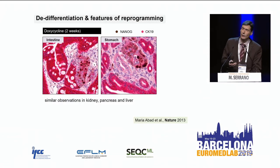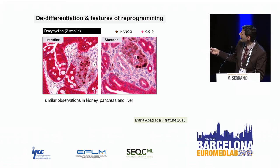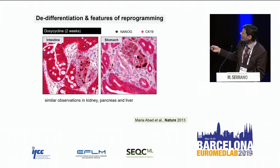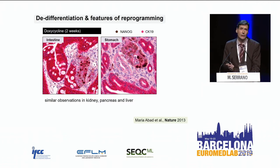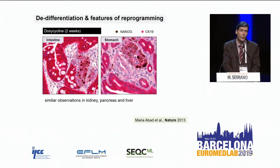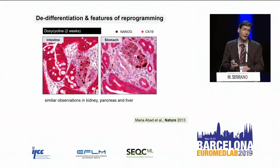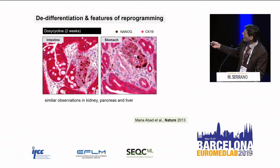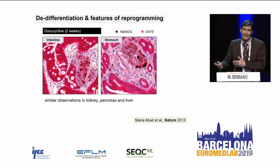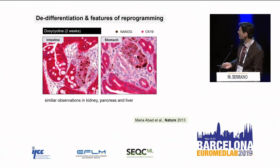Here is an example of this de-differentiation in the large intestine, labeled with cytokeratin-19. You can see a normal crypt, but in another crypt something happened — the cells have lost cytokeratin-19 and are starting to express NANOG. NANOG is a protein unique to pluripotent stem cells, expressed only in the first five days post-fertilization before implantation. So we are reactivating a very early embryonic gene in vivo in adults. This is also observed in the stomach. So we have a tool to induce reprogramming, and if we stop earlier, a tool to induce de-differentiation in many tissues — kidney, pancreas, and liver — but not all, for example not in the lung.